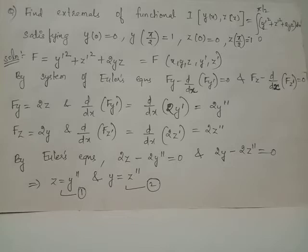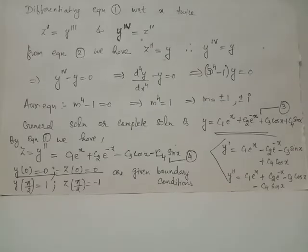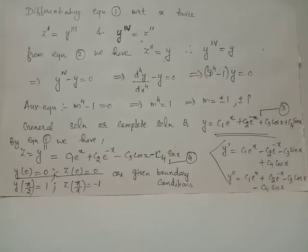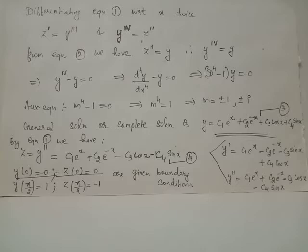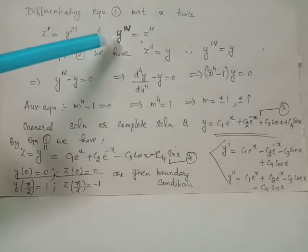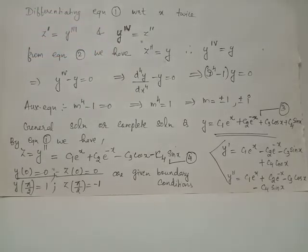From these two equations, we have z equals y double dash (equation 1) and y equals z double dash (equation 2). Differentiating equation 1, z equals y double dash, with respect to x twice: differentiating the first time gives z dash equals y triple dash, and differentiating again gives z double dash equals y raised to the fourth order derivative of y with respect to x.